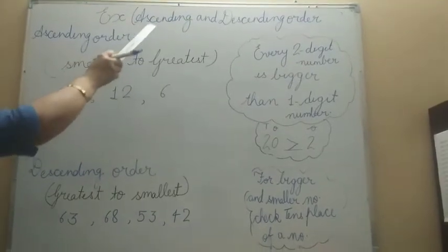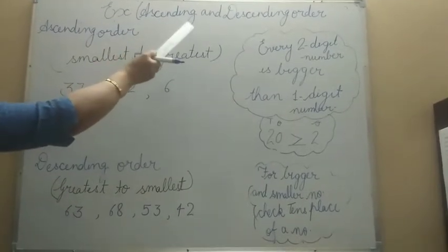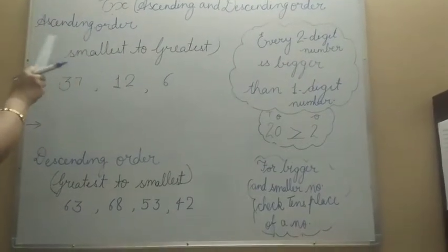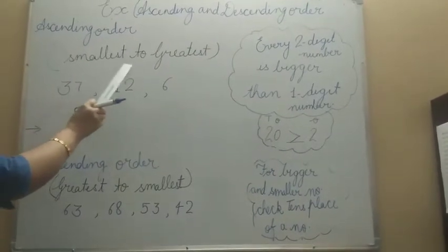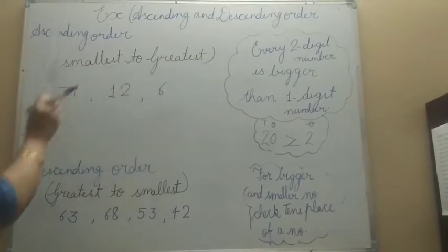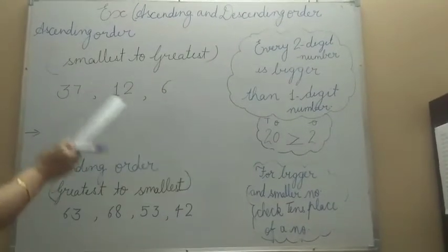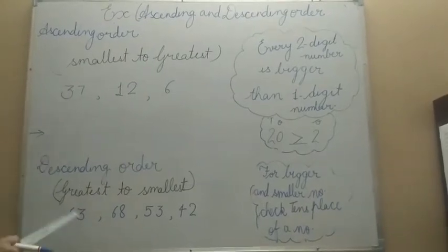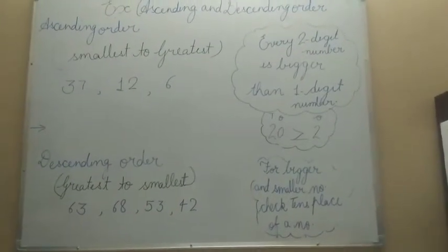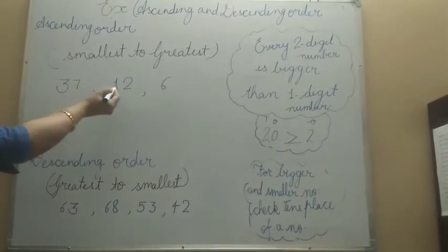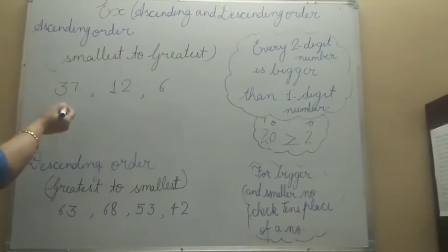Now students, you will learn about ascending and descending order. You have done this in your first class also, so now we will take one more repetition of these topics. Ascending order means arranging numbers from smallest to greatest, and descending order means arranging numbers from greatest to smallest. We will take one example of each. We have the numbers 37, 12, and 6, and we have to arrange them from smallest to greatest.